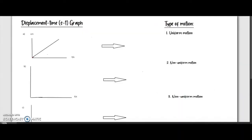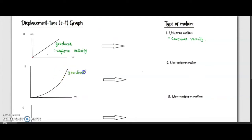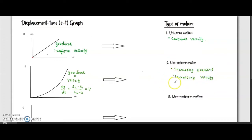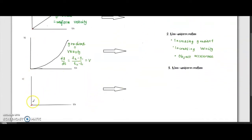Let's first look at the displacement-time graph. The gradient of the displacement-time graph refers to velocity. The first graph — since it is a straight line — refers to constant velocity. The next graph is an increasing graph, which means velocity is increasing, and at each point we're going to have a different value of velocity. To get the value of velocity, we use the first derivative of displacement in terms of time. This means the object is accelerating.